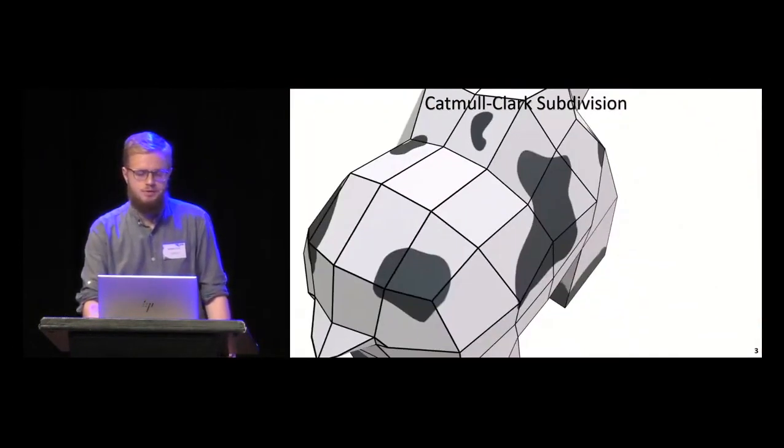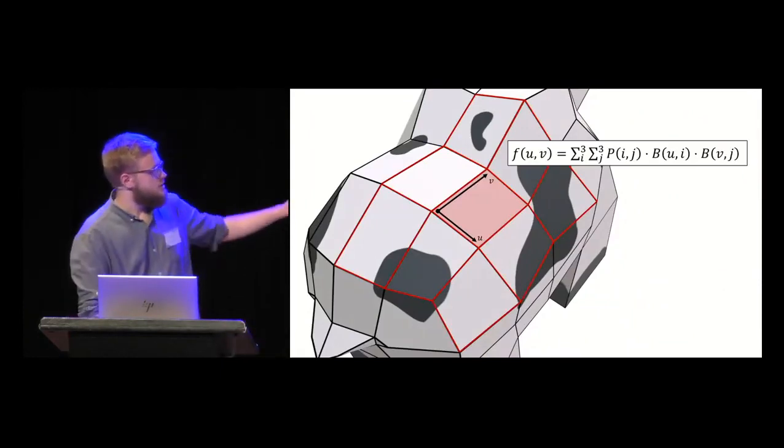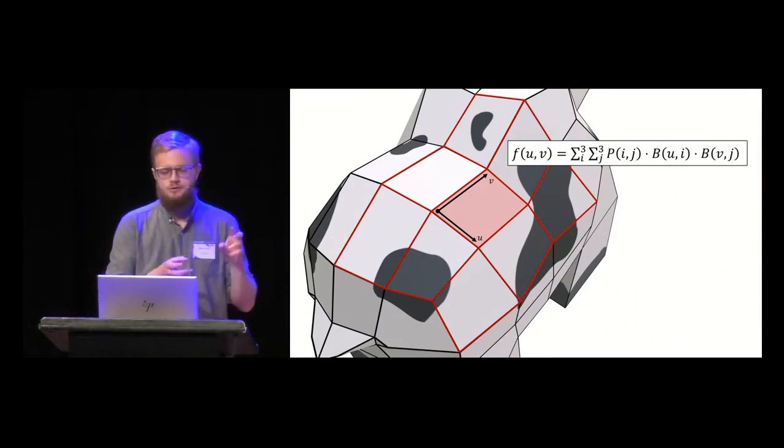How does it work? The concept is based on bi-cubic B-splines. Here we have a grid of 4x4 points and you can evaluate the smooth surface of the center quad using the B-spline formula.